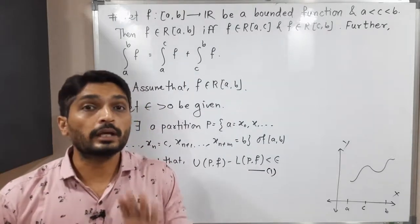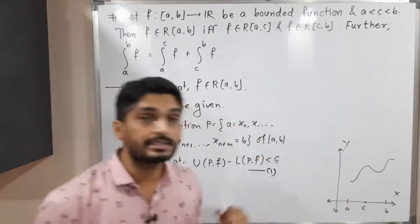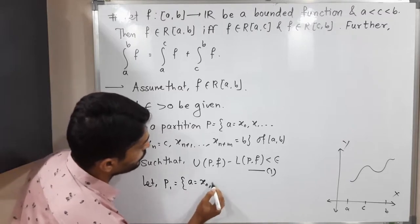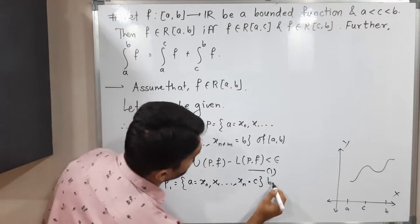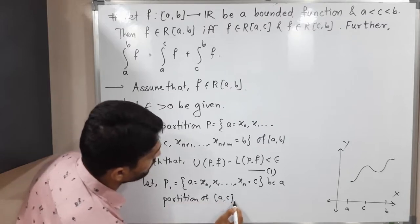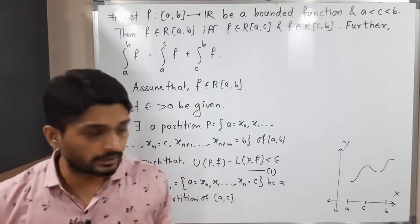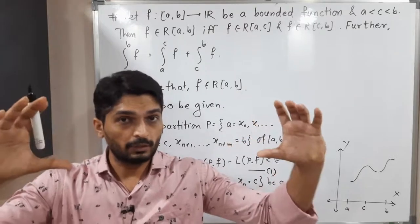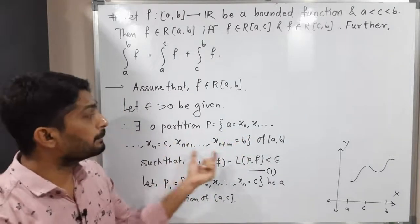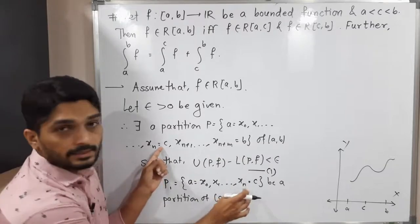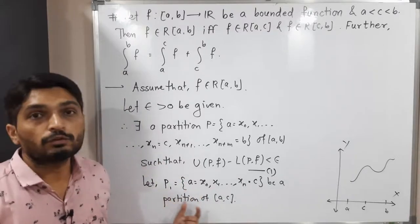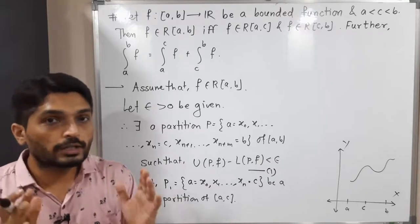Now I will take another partition of the closed interval [a, c] only. Let P₁ = {a = x₀, x₁, ..., xₙ = c} be a partition of [a, c]. What I have done is simple: from the partition P of [a, b], I took only the points up to c, creating a new partition P₁ of [a, c].